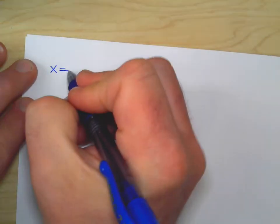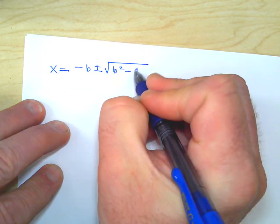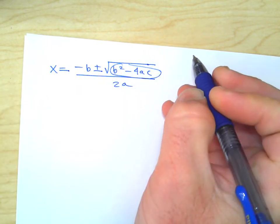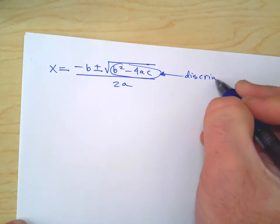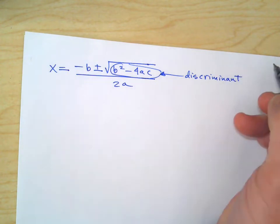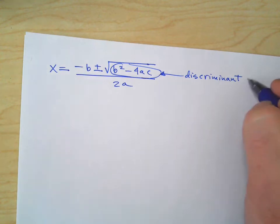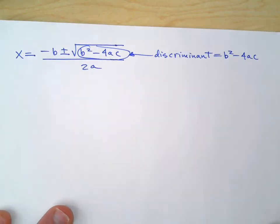That number inside the square root in the quadratic formula tells you how many answers you're going to get. We write our quadratic formula: x equals negative b plus or minus the square root of b squared minus 4ac, all divided by 2a. This thing inside — b squared minus 4ac — has a special name: it's called the discriminant. To discriminate is to tell how things are different. It's just b squared minus 4ac; it does not include the square root.